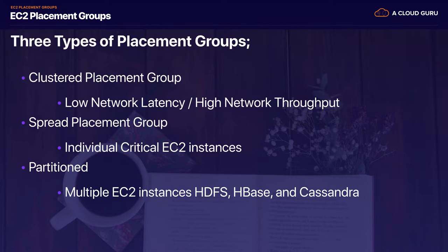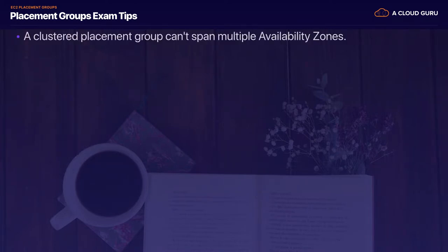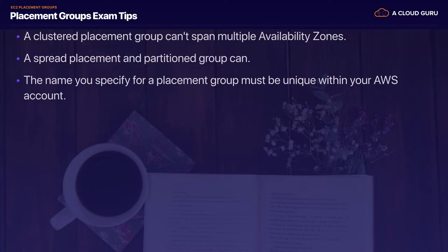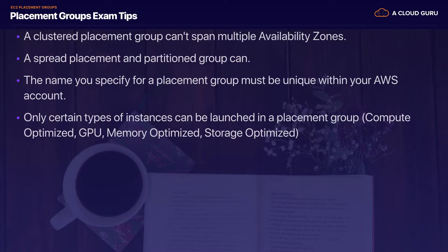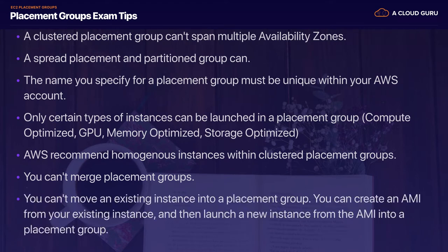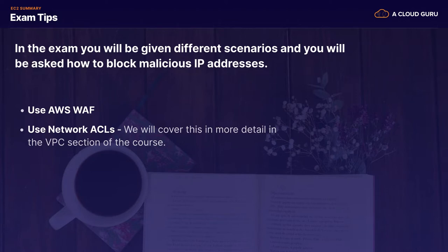The clustered placement group doesn't span multiple availability zones, whereas spread and partitioned placement groups can. The name you specify for a placement group must be unique within your AWS account. Only certain instance types can be launched into placement groups — compute optimized, GPU, memory optimized, storage, etc. AWS recommends homogenous instances within clustered placement groups. You can't merge placement groups or move an existing instance into one; instead, create an AMI from your existing instance and launch the new instance from the AMI into a placement group.